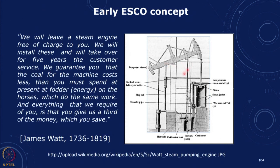The whole operating risk is with the ESCO, especially true for new industries and steam engines. Watt guaranteed that the coal for the machine would cost less than fodder spent on horses doing the same work. Everything required was that you give a third of the money saved — one third coming to James Watt's company and two thirds going to the customer company.